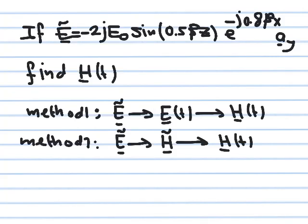We continue solving more examples on electromagnetic waves using Maxwell's equations. We are given the phasor of the electric field: minus 2j E-naught sine(0.5β z) e^(−j0.8β x) in the y direction. The electric field is in the y direction, and its phasor is a function of both x and z. The z dependence is real, while the x part contributes to the phase.